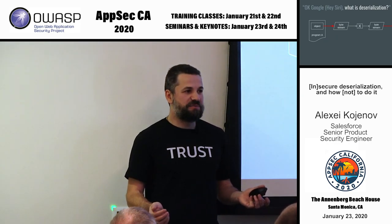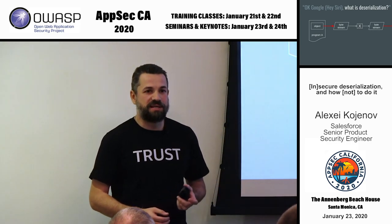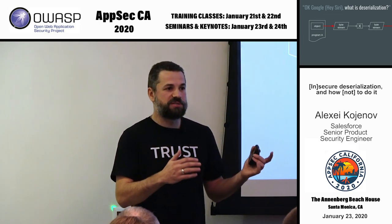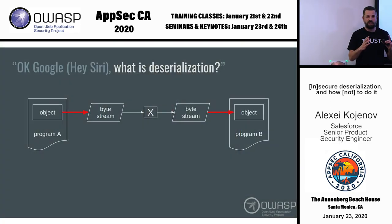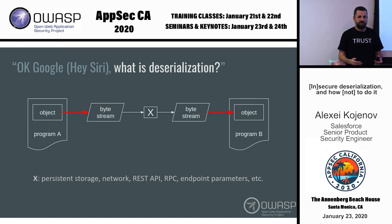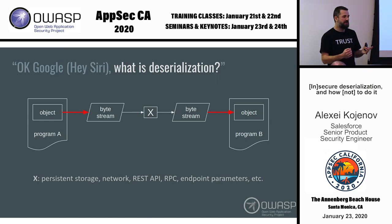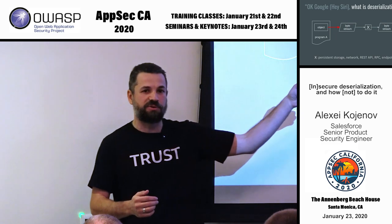Some people think deserialization is some kind of esoteric, very complex subject. But this picture represents what it is. Imagine you have a program with some kind of an object in its memory, and that program wants to send that object to a different program, or maybe store it on disk for later retrieval. That internal object is converted to a byte stream that can be sent over any possible media — a network, an API call, some parameter, or a file on disk. On the other side, the other program receives that byte stream and converts it back to an internal representation of an object. The former is called serialization and the latter is called deserialization.